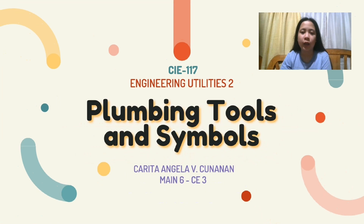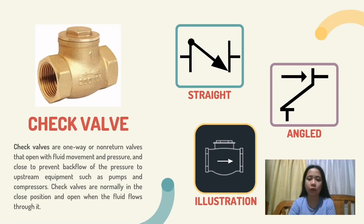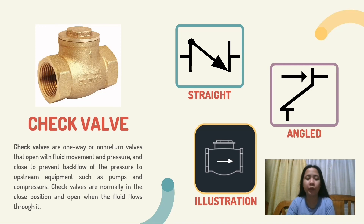Good day. I am Karita Angela Conanan, and I will be discussing plumbing tools and symbols. Check valve. Check valves are one-way or non-return valves that open with fluid movement and pressure, designed to prevent back-pressure to upstream equipment such as pumps and compressors. Check valves are normally in the closed position and open when fluid flows through them. Here are the check valve symbols: straight, angled, and the check valve illustration.